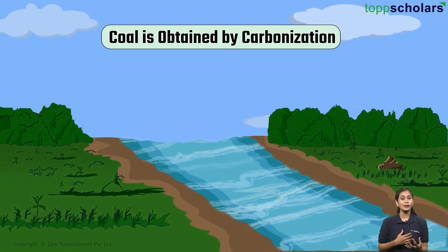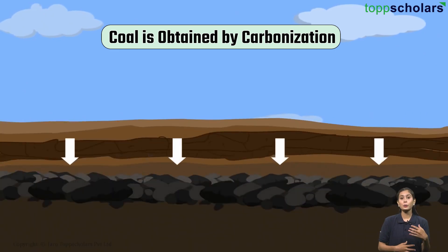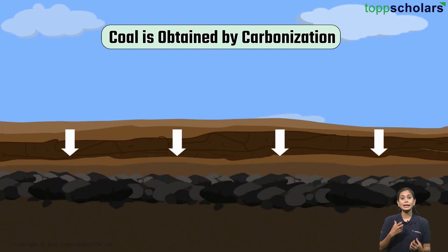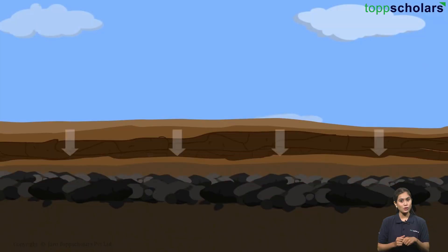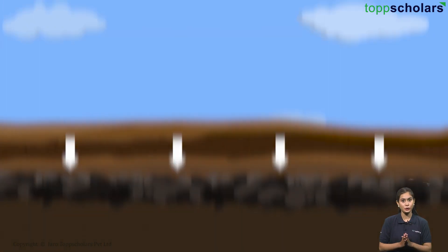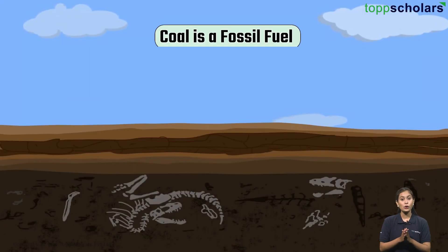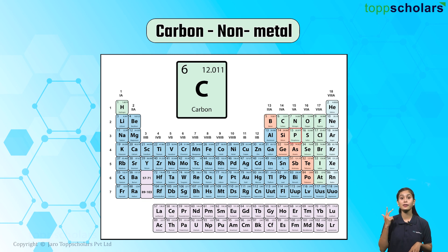Coal is obtained by carbonization, which is the process involving being turned into carbon through various techniques like burning and heating of wood. This transformation is affected by high temperature and high pressure. Coal is a fossil fuel. It contains carbon, hydrogen, and oxygen along with nitrogen, phosphorus, and sulfur.